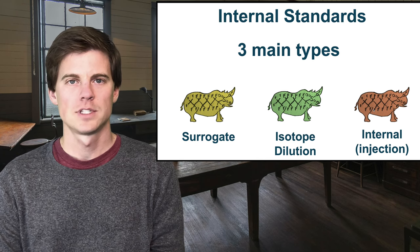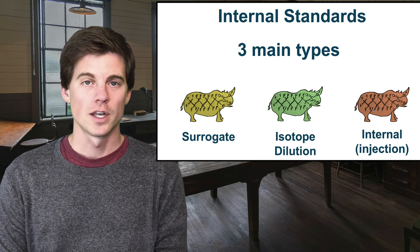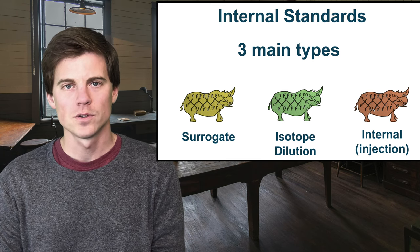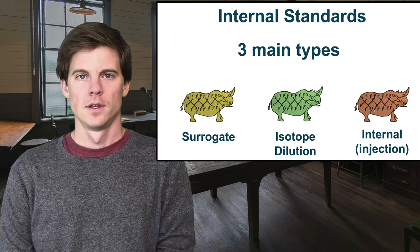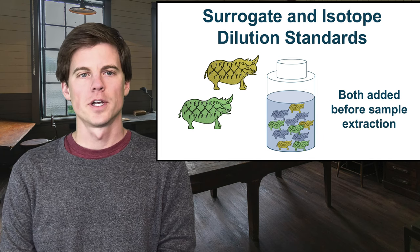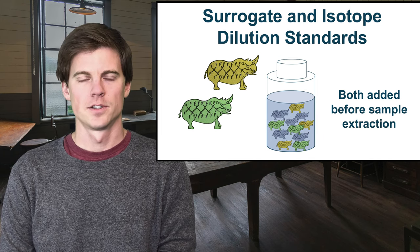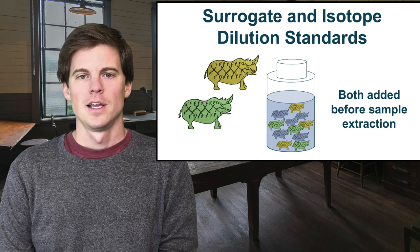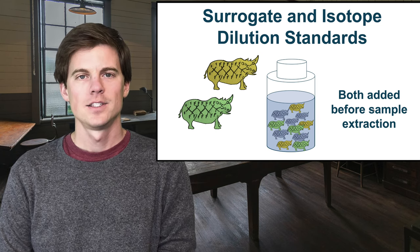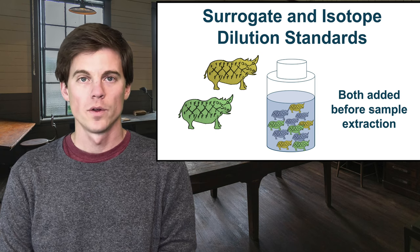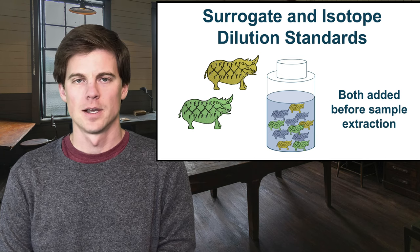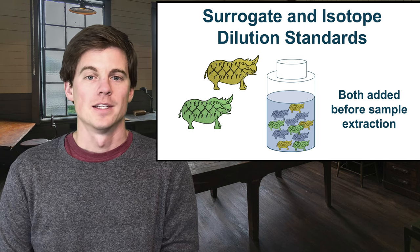There are three main types of internal standards: surrogate internal standards, isotope dilution internal standards, and what many people call injection internal standards. First, surrogate and isotope dilution standards — I cover these together because both are added before sample extraction. So you add these to your sample bottle, your soil, serum, or whatever it is you're analyzing, and they are carried out through the entire extraction.